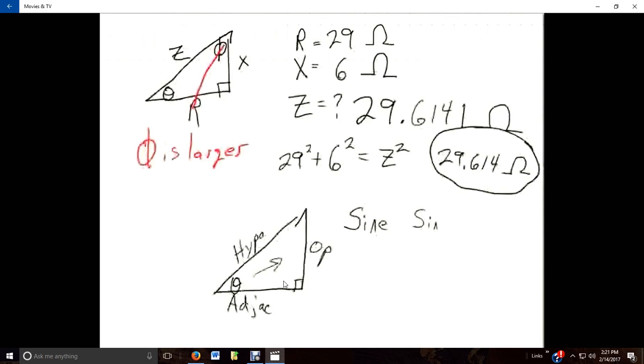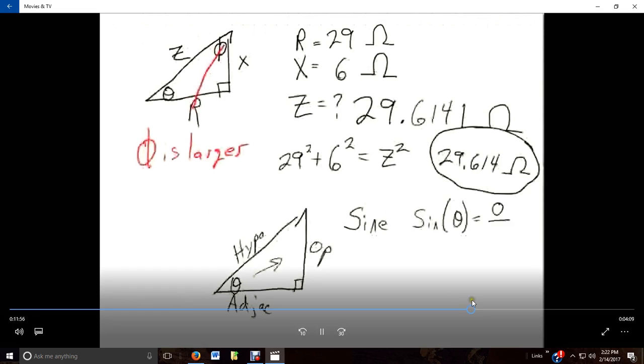Sine, which is abbreviated SIN, sine of theta is going to equal the opposite over the hypotenuse.